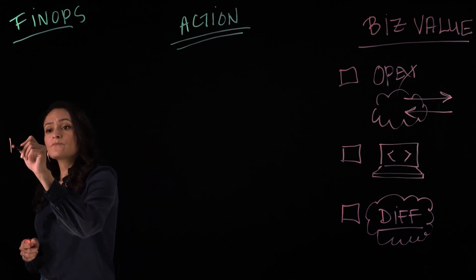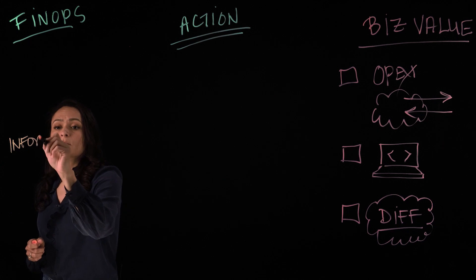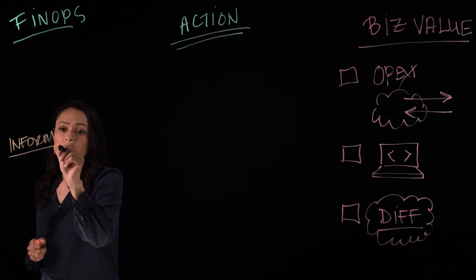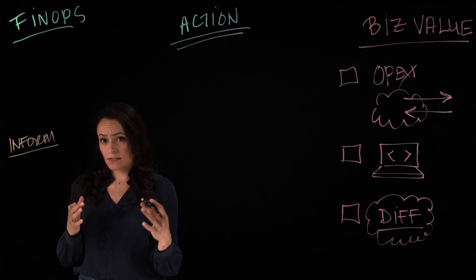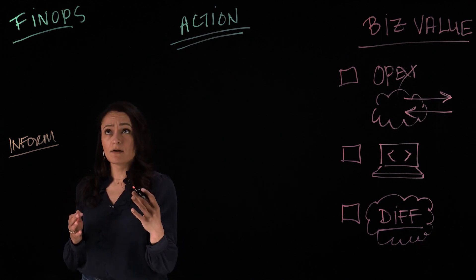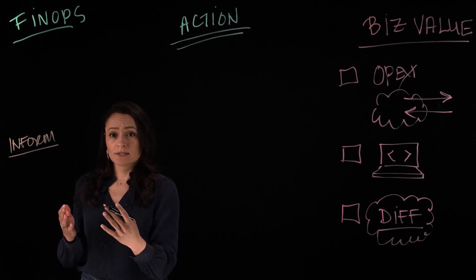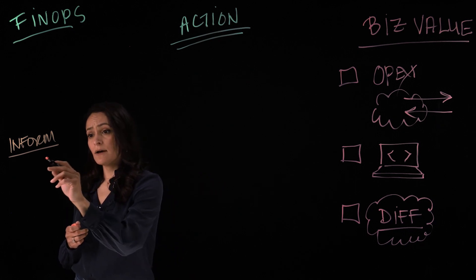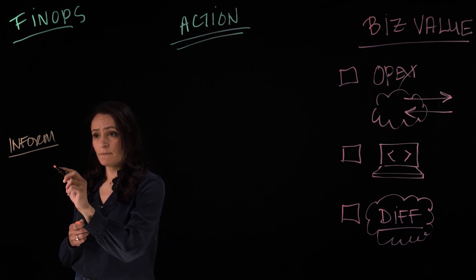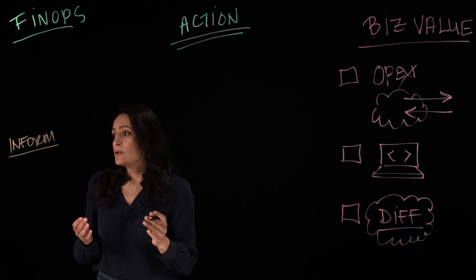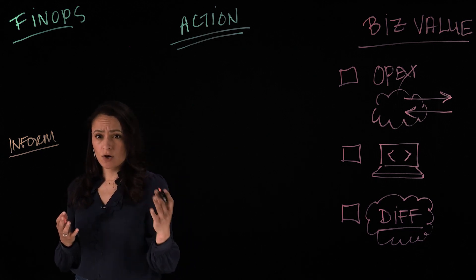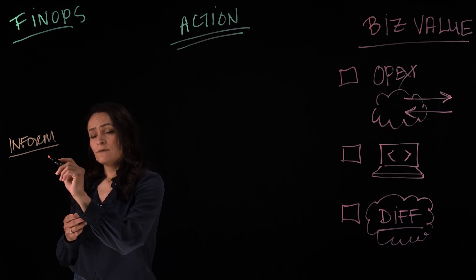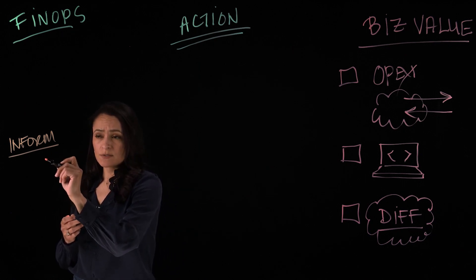For FinOps though, there are three phases the FinOps Foundation has identified. Three phases that organizations go through as they are adopting these best practices in order to get that business value out of the cloud. The first one is Inform. This is about giving teams the visibility, showback, chargeback, reporting. Visibility to make smarter spending decisions.